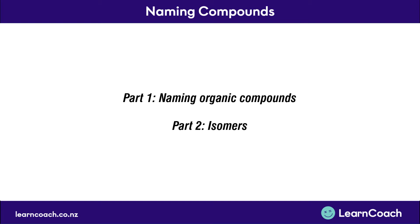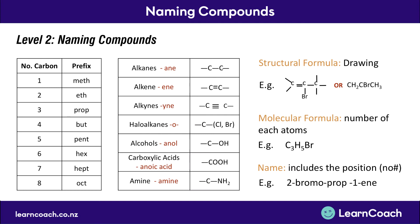At the start of each point, I'll briefly touch on what you need to have known from last year. To start off with naming organic compounds, at Level 2 we learned all the prefixes which get matched up with the number of carbons. For example, one carbon has a prefix of meth, five carbons have a prefix of pent, and so on. These are all listed in the table here.